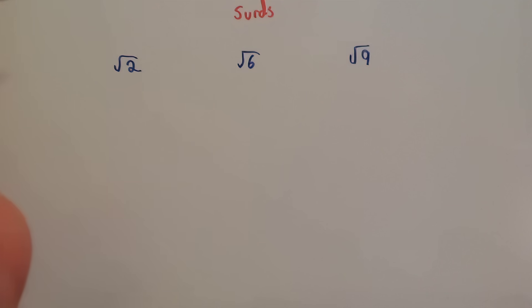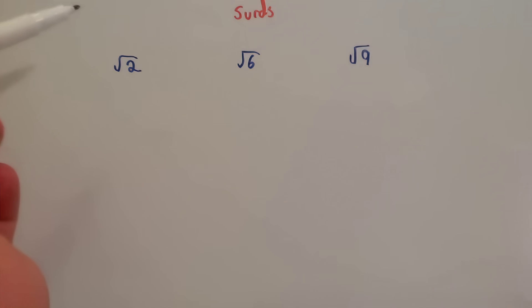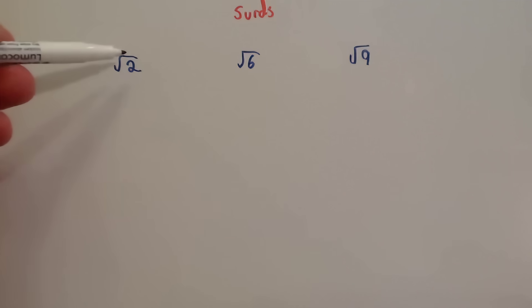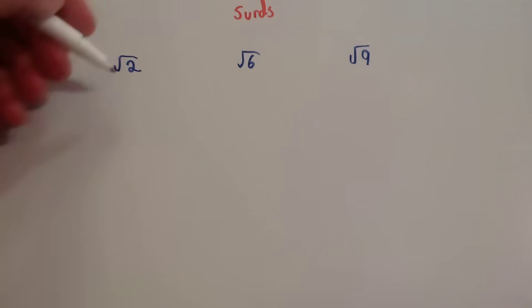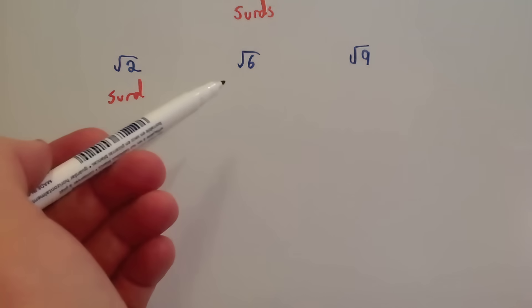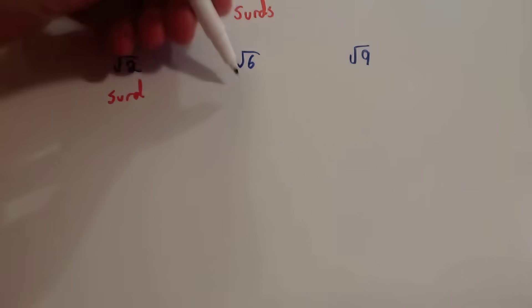In this video we're going to look at surds. Whenever you write a number with a square root sign and it's an irrational answer, it's a surd. In other words, you can't get rid of the square root. If you were to try the square root of 2, that would be 1.4 and so on — it would go on forever. That's an irrational number, so it's a surd. If you were to try the square root of 6, you're going to get an irrational answer, so that is also a surd.